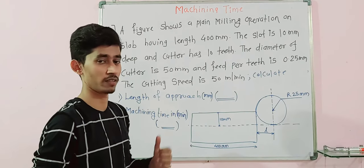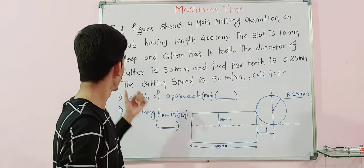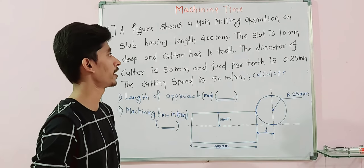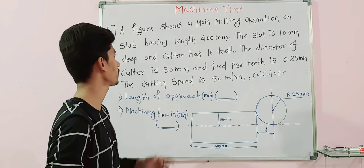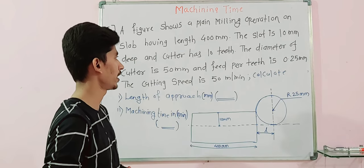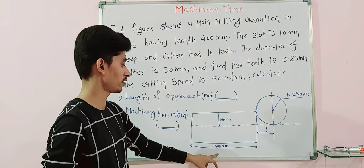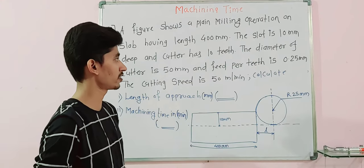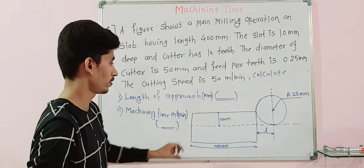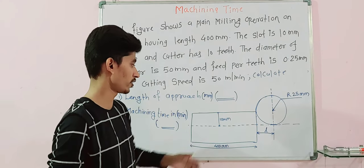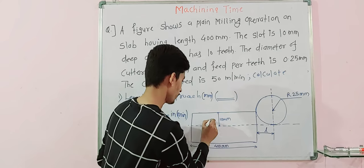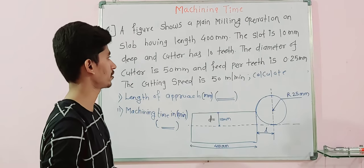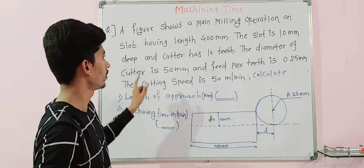In this problem, a figure is provided showing a plane milling operation on a slab having a length of 400 mm. So the slab length is given as 400 mm. The slot is 10 mm deep — this is nothing but the depth of cut for the particular slot, 10 mm deep.